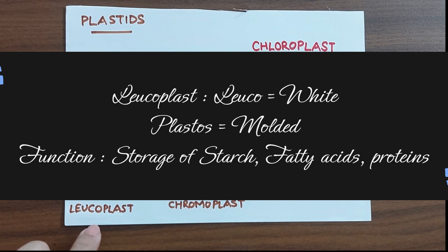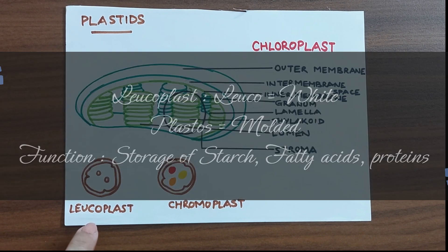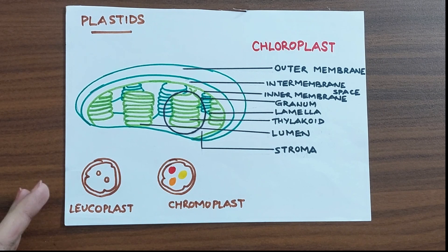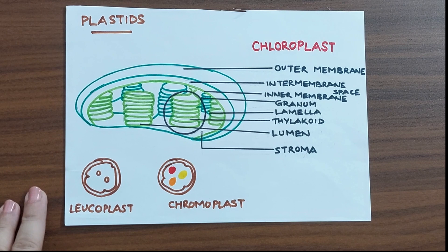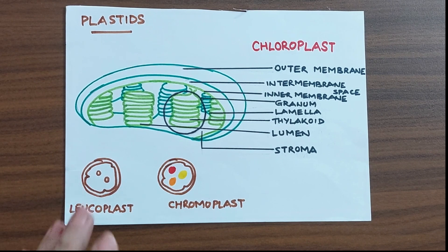Leukoplasts are non-pigmented plastids and they are responsible for synthesizing and storing macromolecules like starch, lipids, proteins and they are found very much in roots, tubers and sometimes in seeds as well.